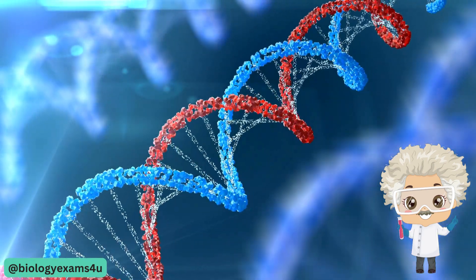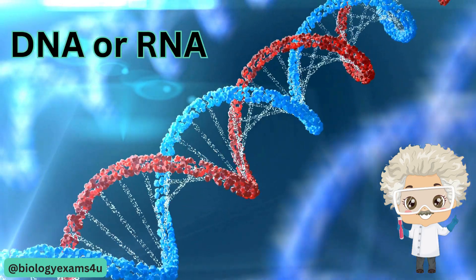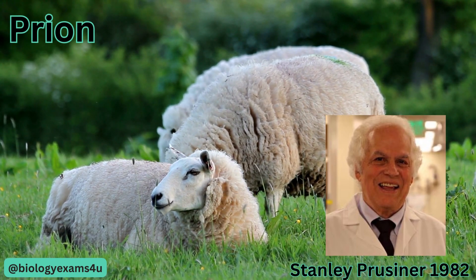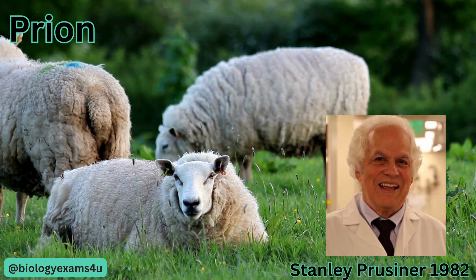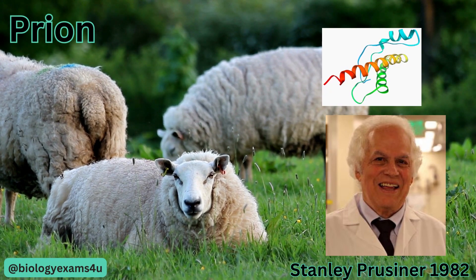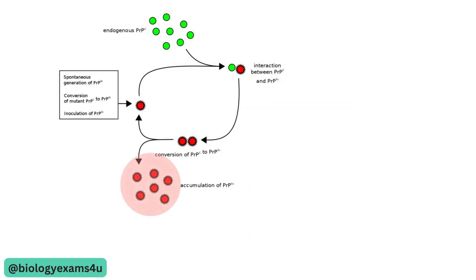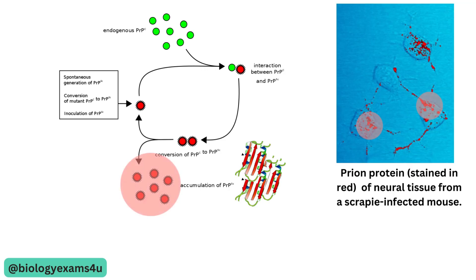Scientists once believed that any infectious particle must contain nucleic acids, either DNA or RNA. Then in 1982, Stanley Prusiner, a medical doctor studying scrapie — a fatal degenerative disease in sheep — discovered that the disease was caused by a proteinaceous infectious particle, or prion. These infectious protein molecules can misfold and cause other proteins to misfold as well. A prion is a misfolded form of a normal protein, such as PrPC found in the cell. This misfolded protein, PrPSc, may be caused by a genetic mutation or occur spontaneously, and can stimulate other normal proteins to become misfolded, forming plaques.